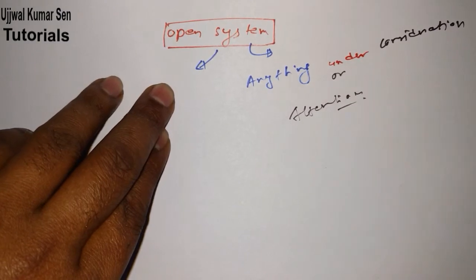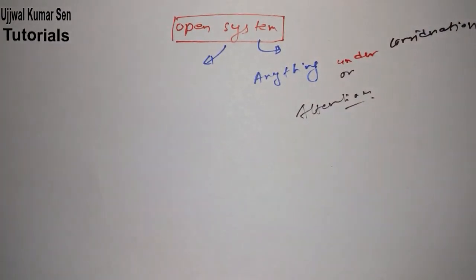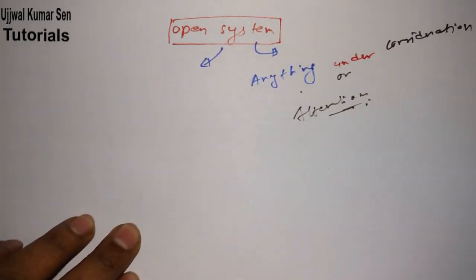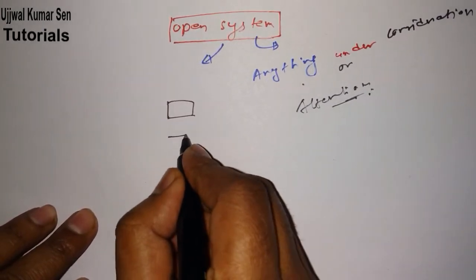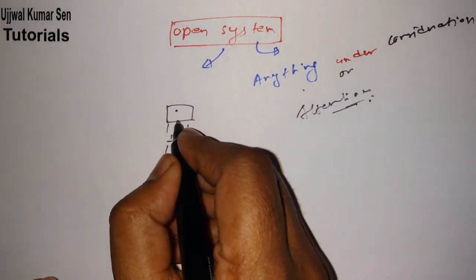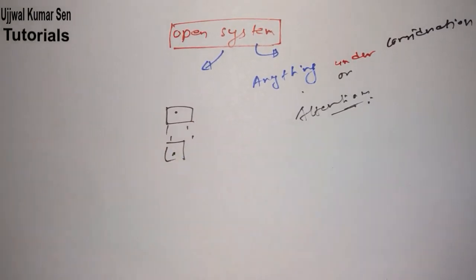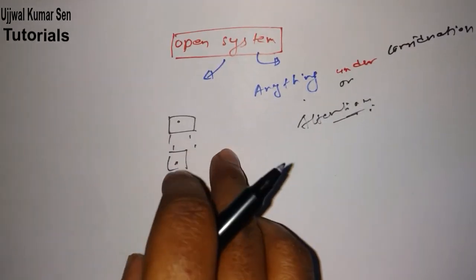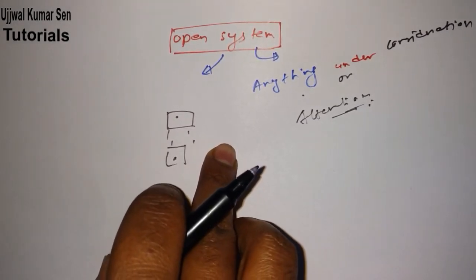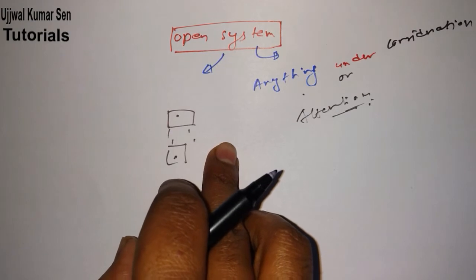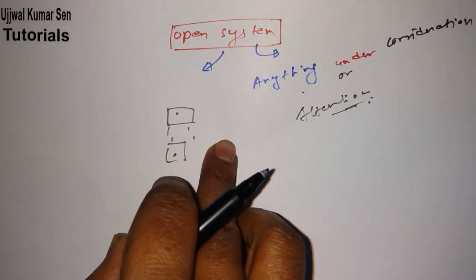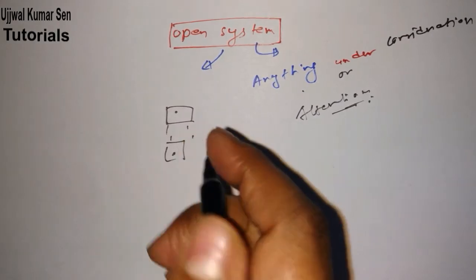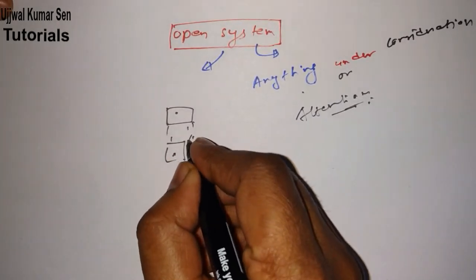I've already shared with you in previous videos that surrounding and boundary depend on the system. The system is decided by anything under consideration or attention. Suppose you're watching my videos - the system is you and this device. There's nothing else in the system if you're focusing your attention on this video tutorial. Other things just a little bit in distance with you are the surrounding.